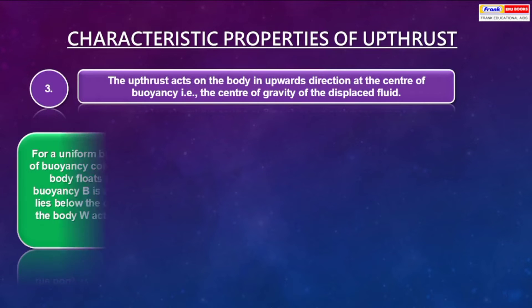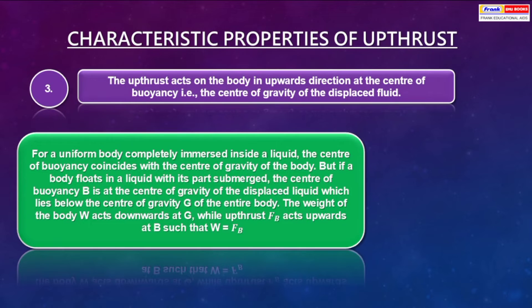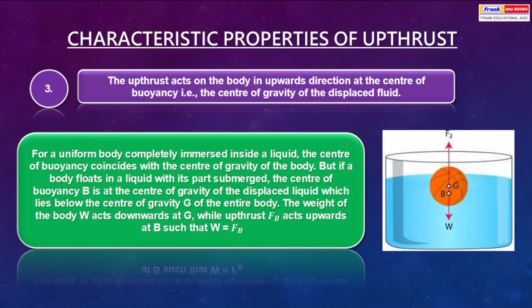Third, the upthrust acts on the body in an upward direction at the center of buoyancy, which is the center of gravity of the displaced fluid. For a uniform body completely immersed in a liquid, the center of buoyancy coincides with the center of gravity of the body. But if a body floats with only part submerged, the center of buoyancy B is at the center of gravity of the displaced liquid, which lies below the center of gravity G of the entire body. The weight W acts downward at G while the buoyant force acts upward at B, such that W equals FB.